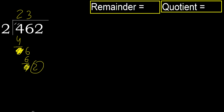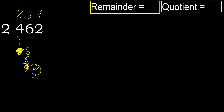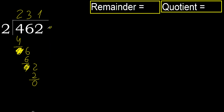Bring down 2. 2 multiplied by 1 is 2, is not greater. Ok, subtract. Next, that is not a number, therefore finish it.